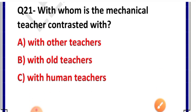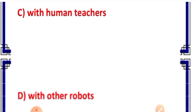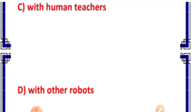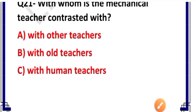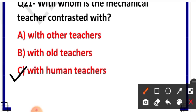Question number 21: With whom is the mechanical teacher contrasted? Options: with other teachers, with old teachers, with human teachers, or with other robots. Correct answer is option C — with human teachers. Manav teacher hote hain, un ke saath mechanical teacher ko contrast kiya gaya hai.